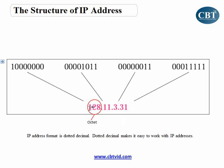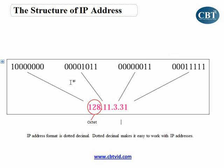This is called the dotted decimal format of an IP address, meaning it is written in decimal. But your computer doesn't work with decimal — it works with binary, meaning zeros and ones. For us, it is very difficult to use binary. For example, which is easier to say: 128.11.3.31 or 10000000.00001011? Dotted decimal is easy for us, and you enter it when assigning it to your network card. But your computer works with the binary version.